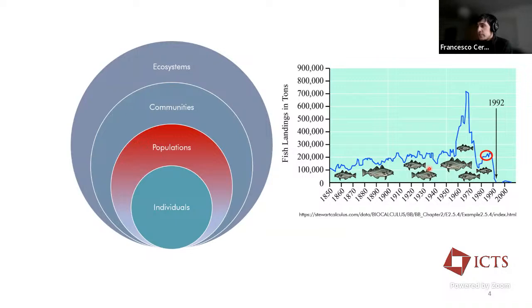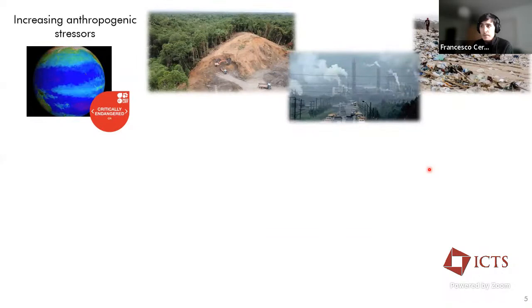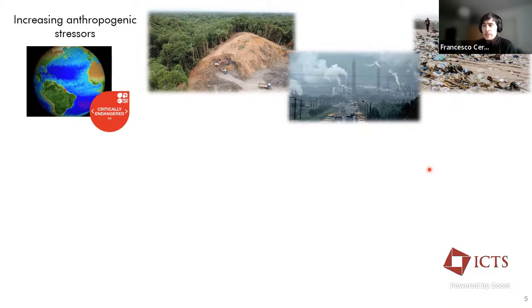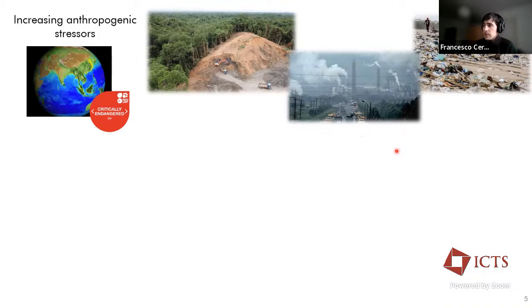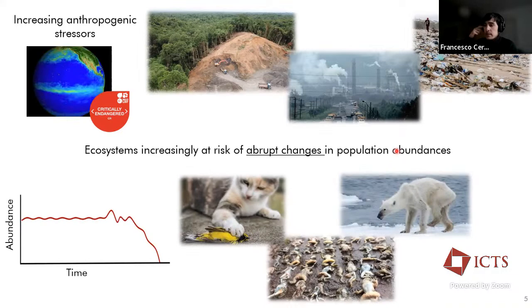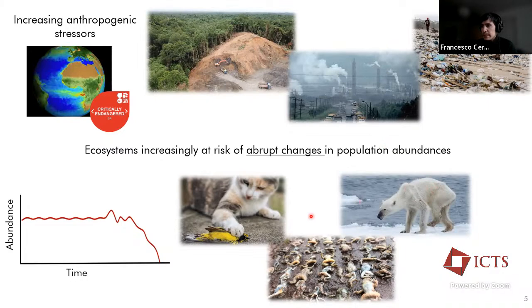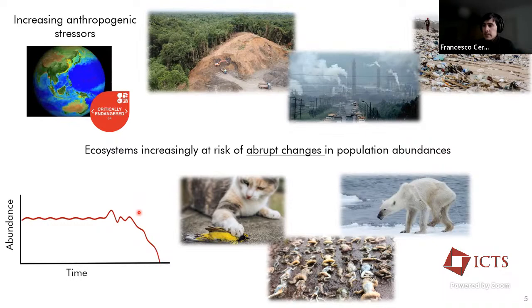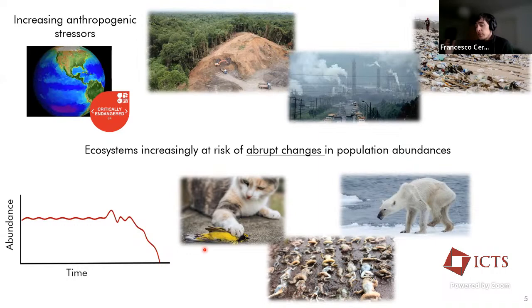Basically, such a situation of abrupt changes has become more and more likely to happen in several ecosystems throughout the world due to the increasing anthropogenic stressors that are happening, such as habitat loss and pollution and alien species. All of these stressors are putting populations, natural populations, at risk of, increasingly at risk of, undergoing sudden changes in the abundance that we can call collapse up to the local extinction of the population and potential extinction of some species.